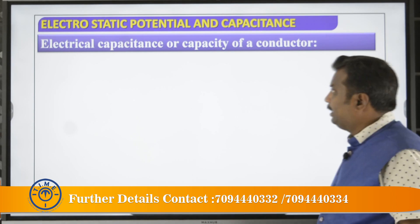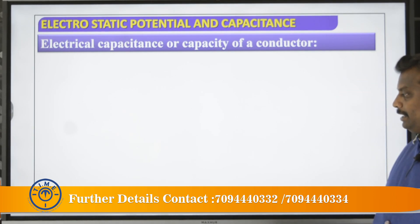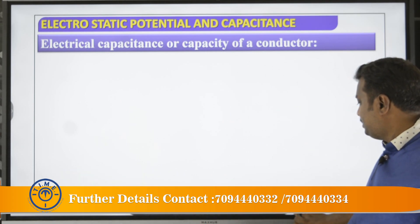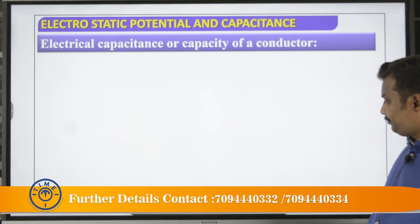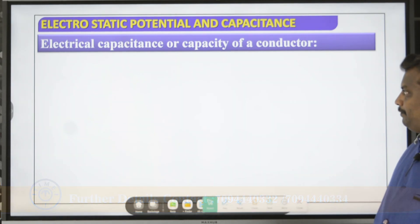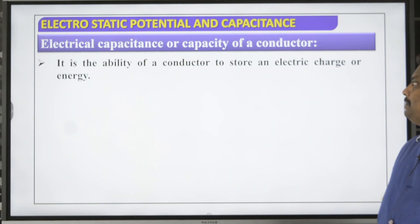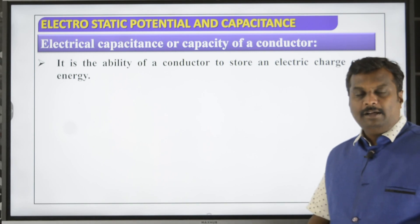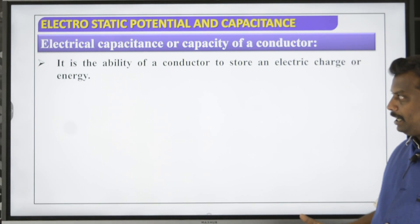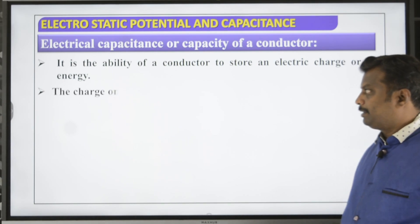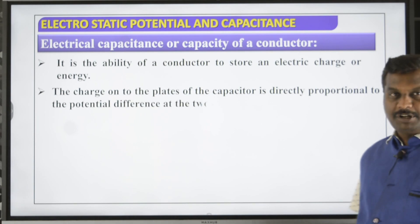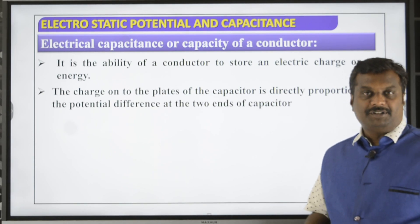Electrical capacitance, or the capacity of a conductor, is the ability of the conductor to store electric charge. When charges are stored, energy is automatically stored. The charge on the plates of the capacitor is directly proportional to the potential: Q is directly proportional to V.